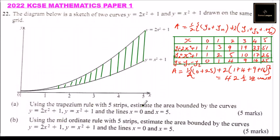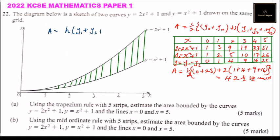For the mid-ordinate rule, the formula is: Area equals h — the strip width — multiplied by the sum of the midpoint ordinates: y1 plus y2 plus ... plus yn. We need to set up a table using midpoint x-values.